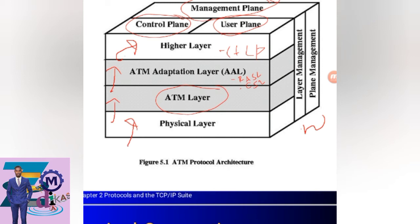The ATM protocol architecture is designed to support the transfer of data and to guarantee quality of service. All the layers in the telecommunication system work toward ensuring quality of service. User data is divided into small cells and transported over a virtual connection, starting from the physical layer up through the ATM layer.